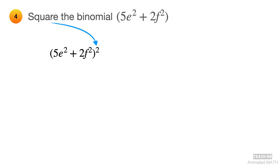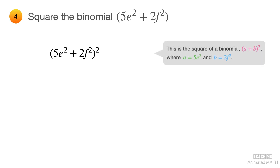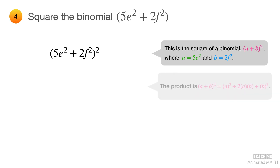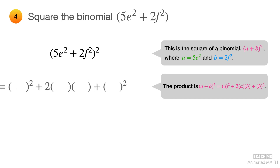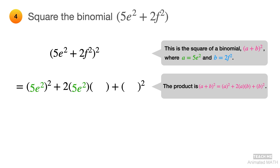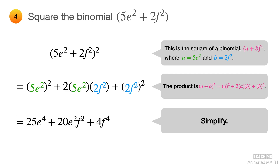First, square the binomial. Then use the perfect square add times add pattern, which is (a + b)², but with a equal to 5e² and b equal to 2f². Its product is a² + 2ab + b². Substitute 5e² for all a's and 2f² for all b's, then simplify the expression. The final answer is 25e⁴ + 20e²f² + 4f⁴.